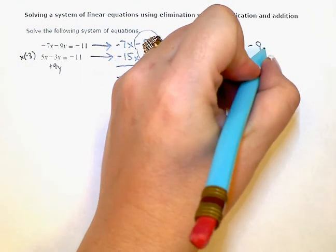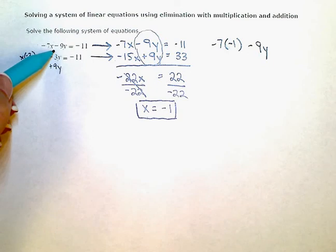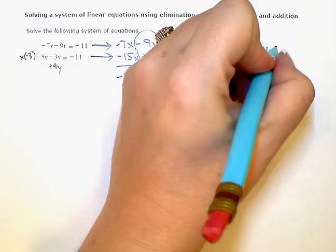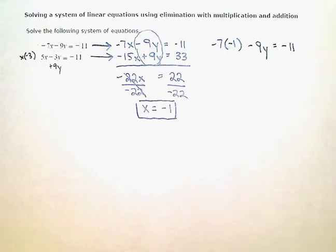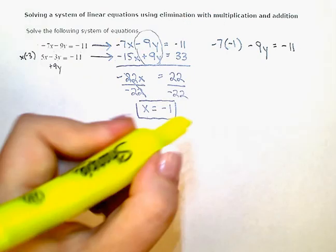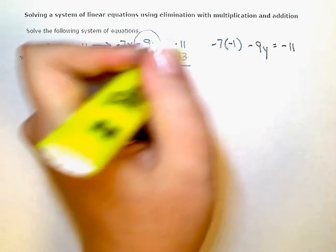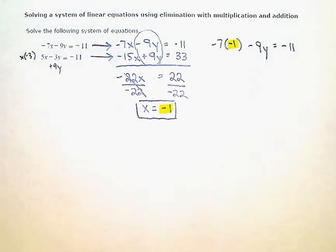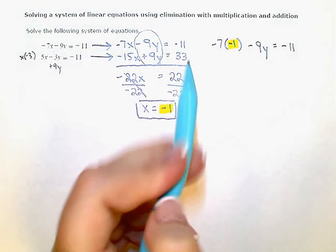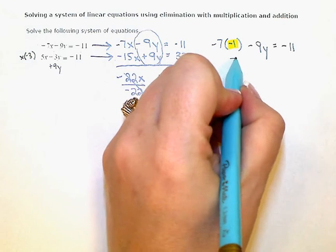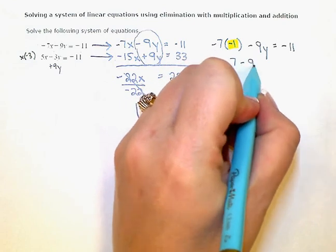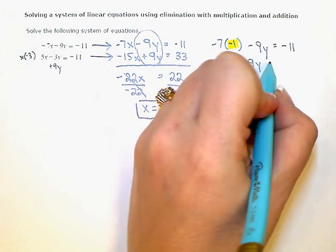Then minus 9y equals negative 11. So this negative 1 was substituted up there. So negative 7 times negative 1 is positive 7 minus 9y equals negative 11.